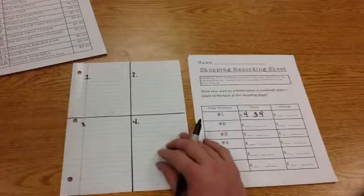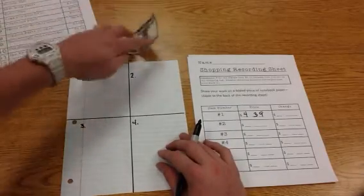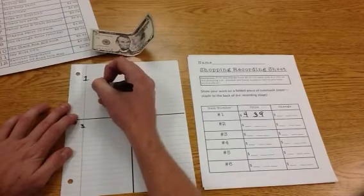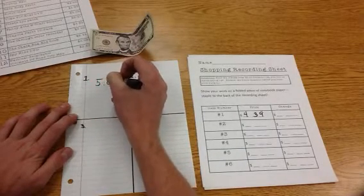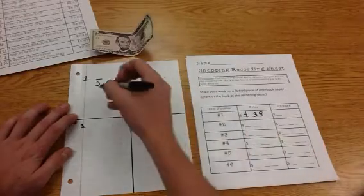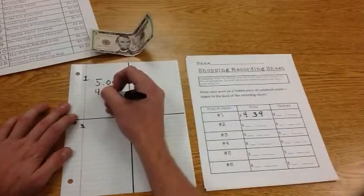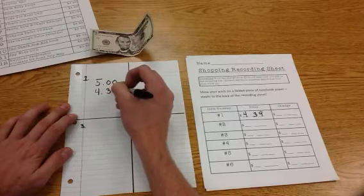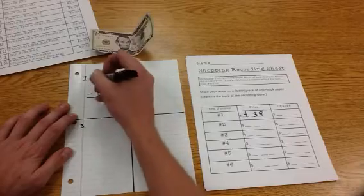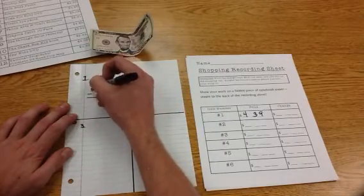But Mr. Zortman is going to pay with a $5 bill. So I want to find the difference between my $5 and the $4.39 that it costs. So I'm going to take my $5 and subtract $4.39 because that's the price of what I'm paying for.